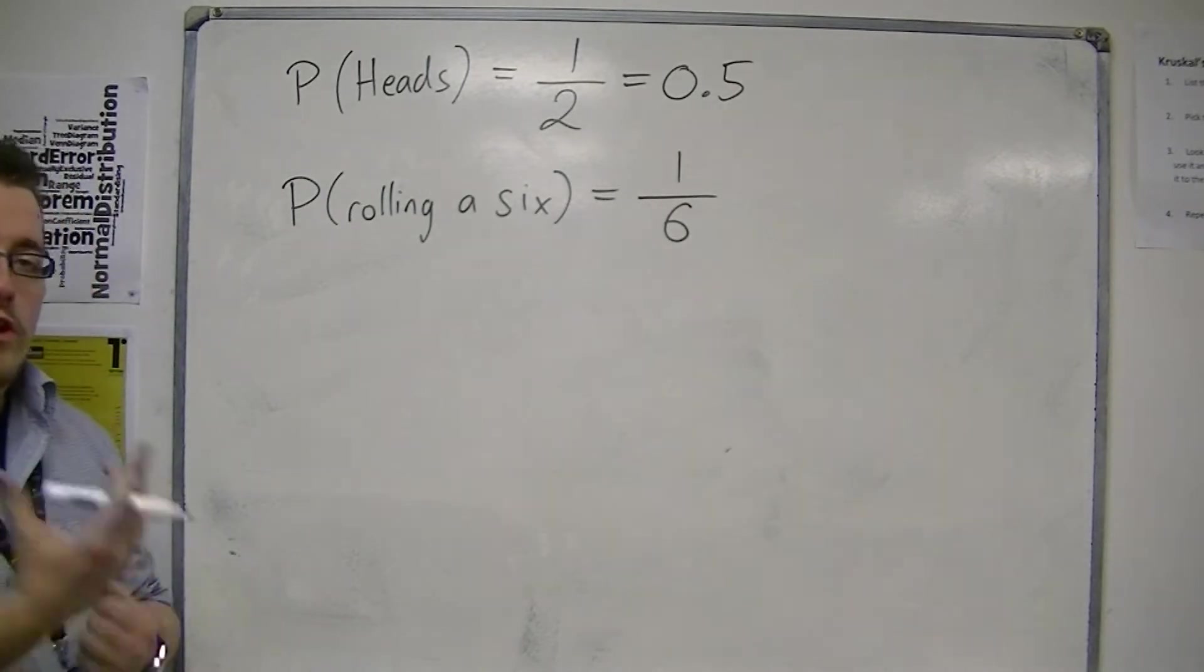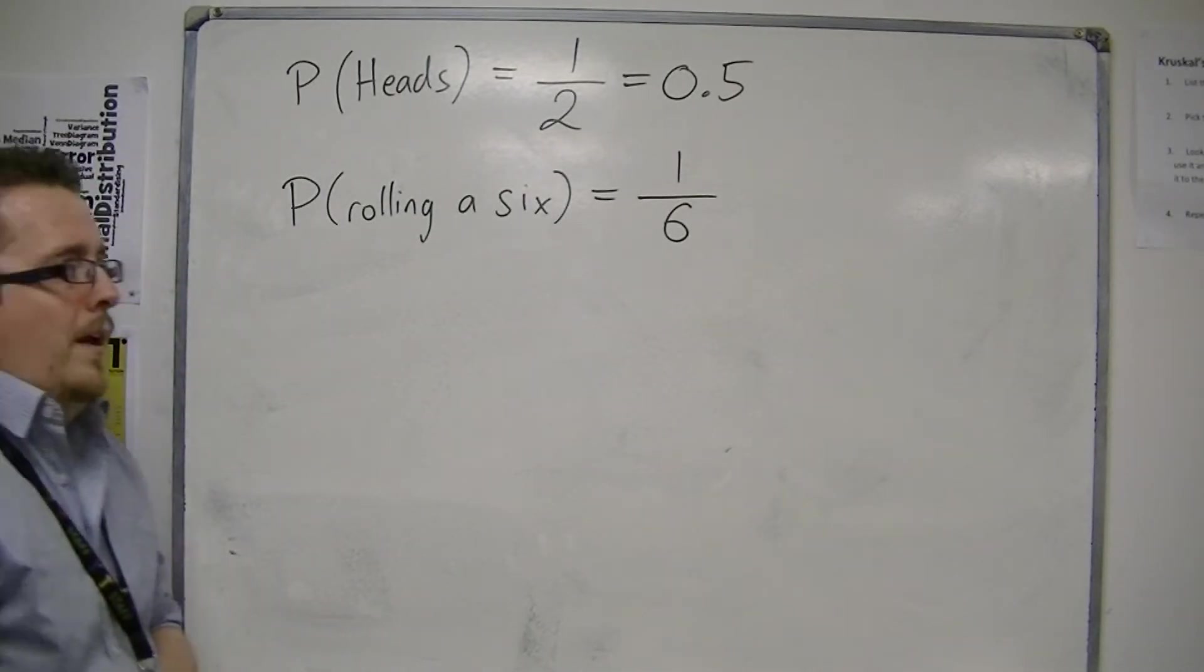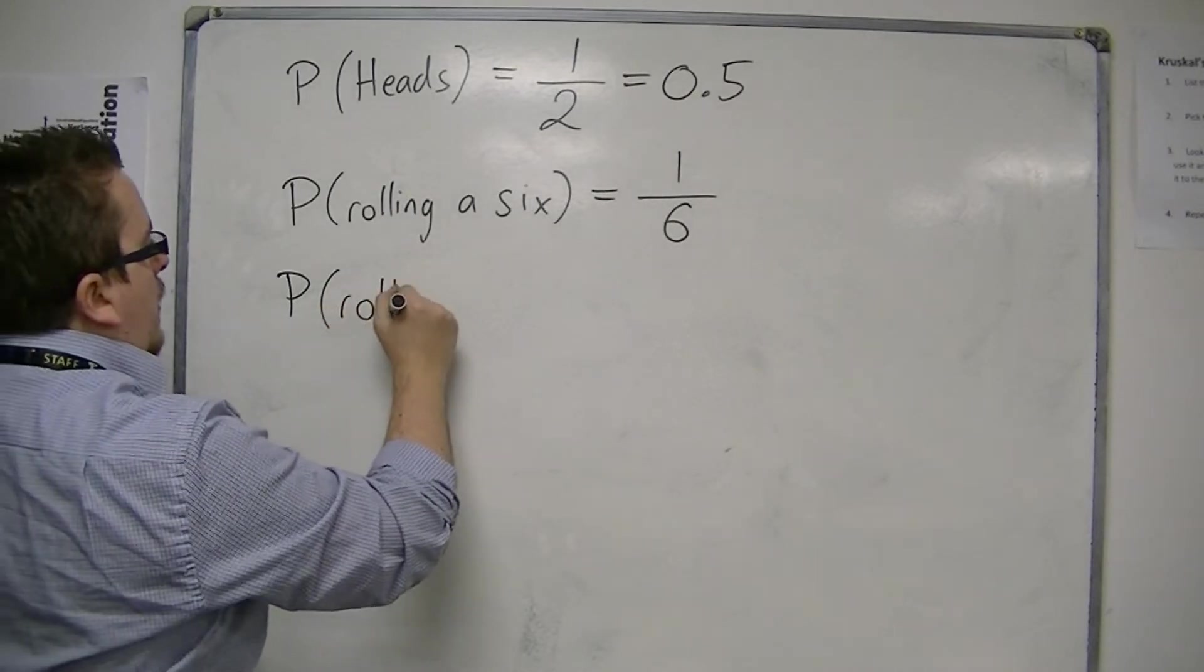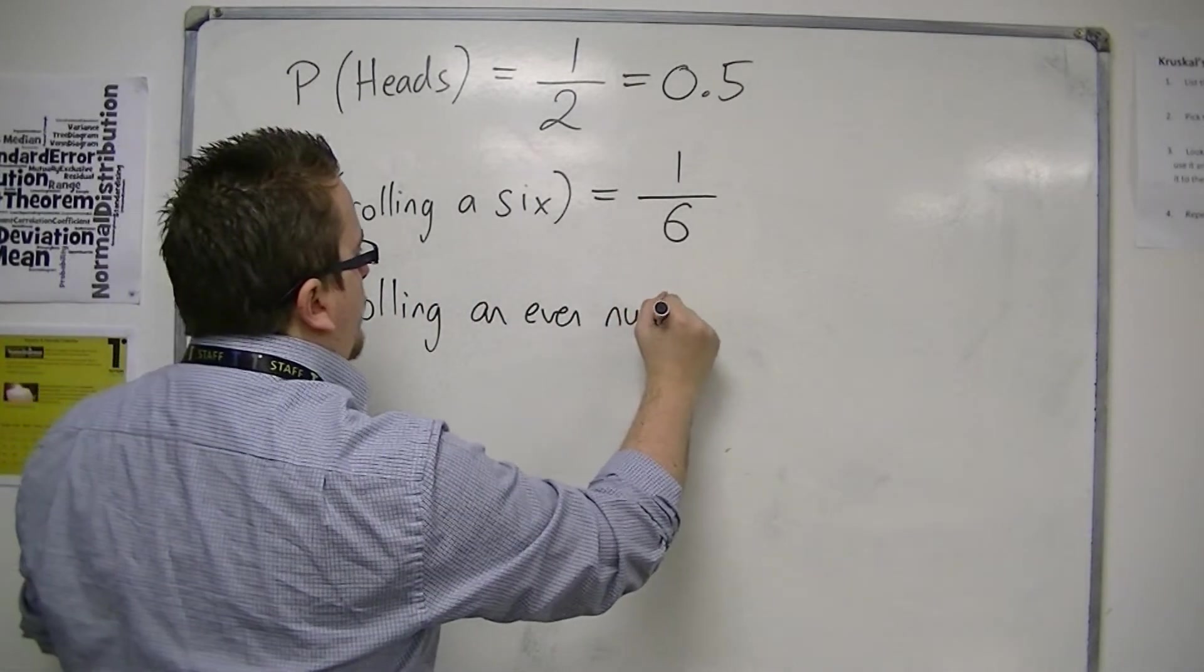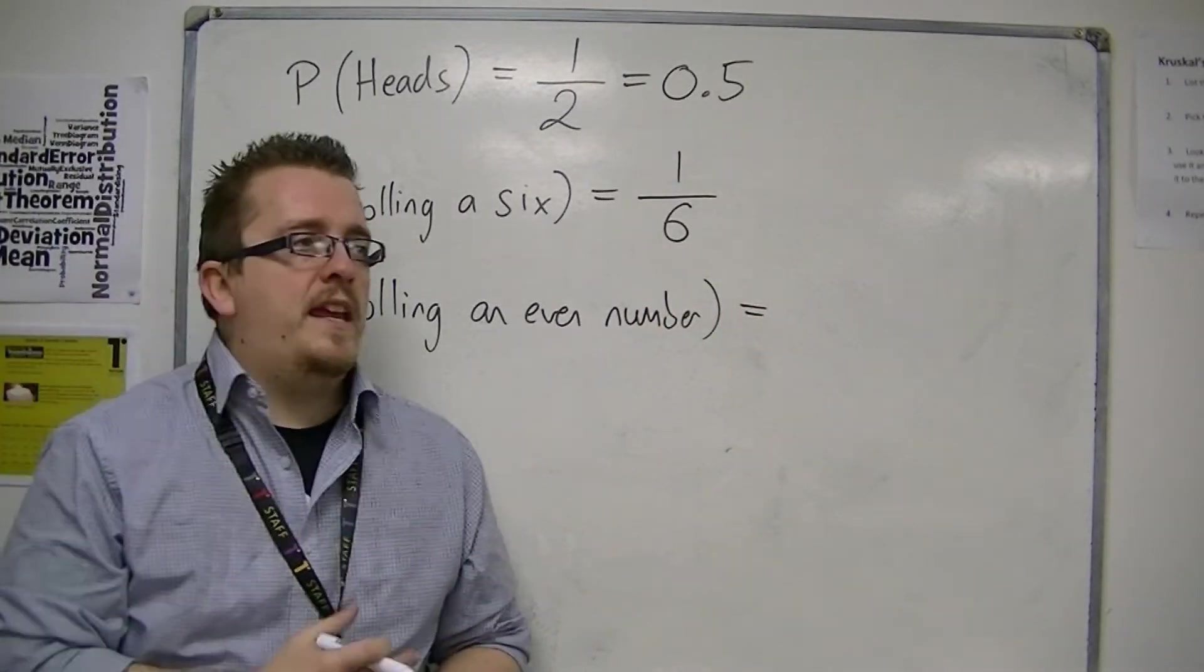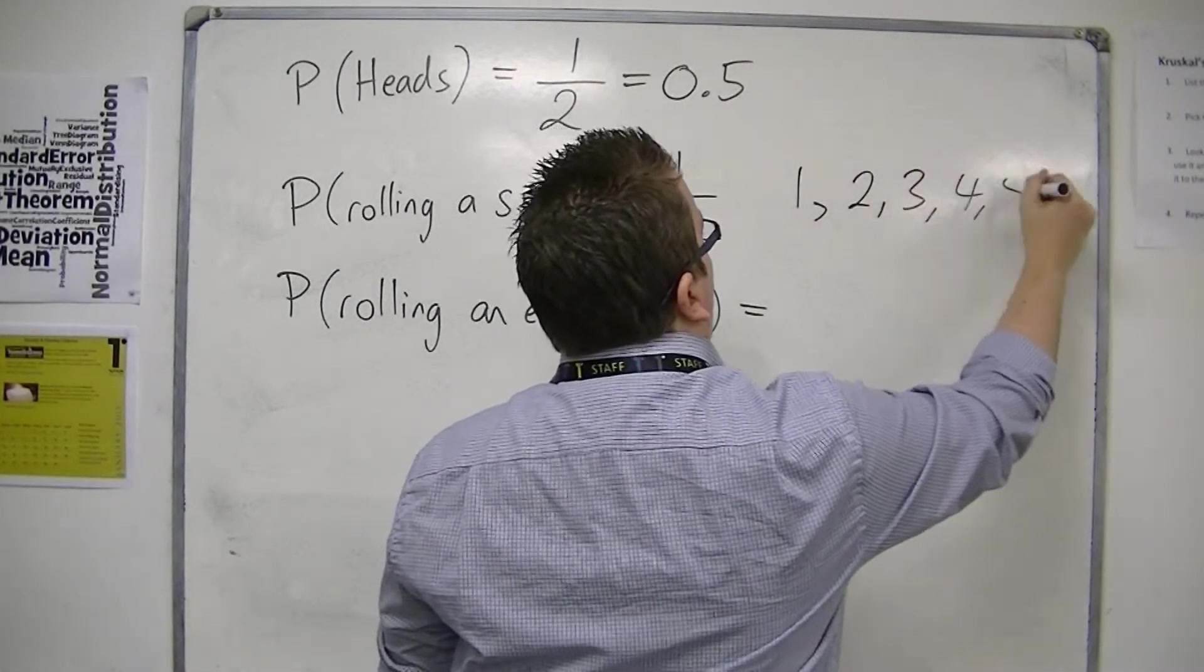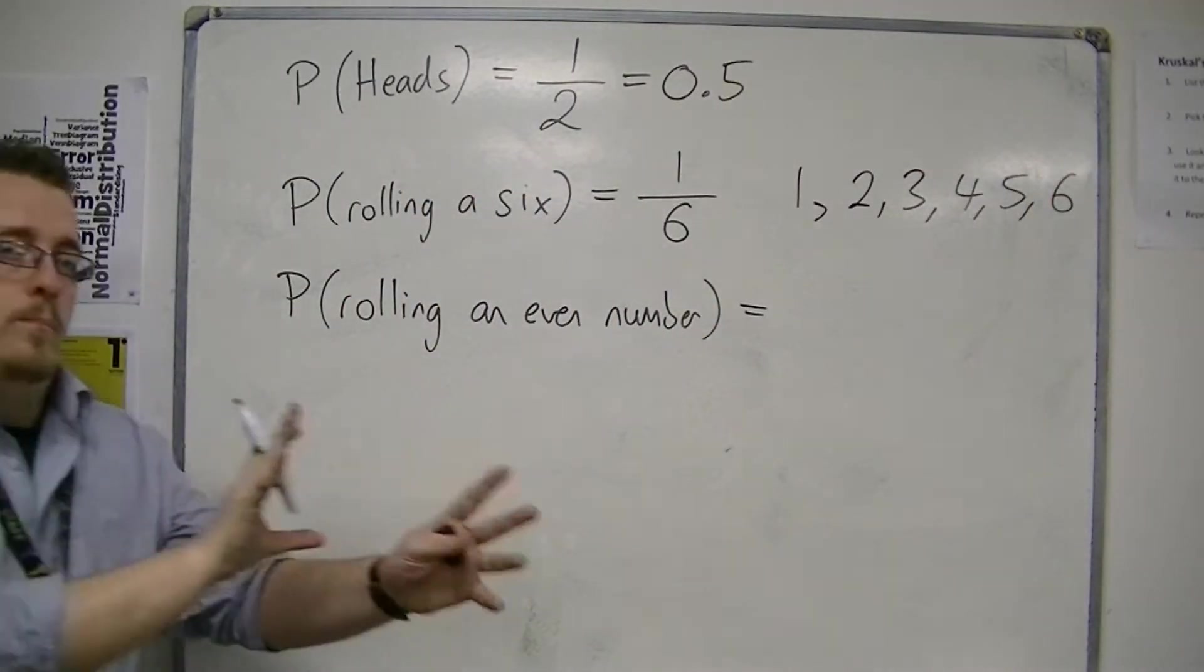Now, things get a little more interesting. How about if I roll my die and I'm looking for an even number? Rolling an even number. Now, the possible numbers that are on this die are 1, 2, 3, 4, 5, and 6. 1 to 6. And each has an even chance.